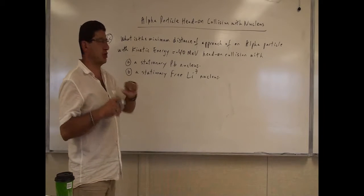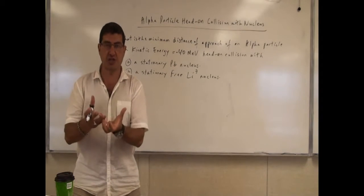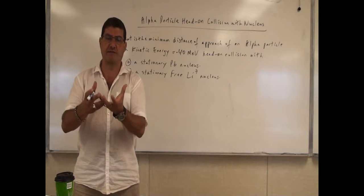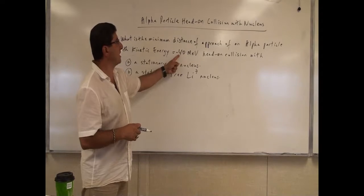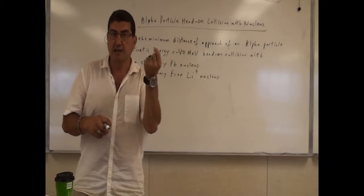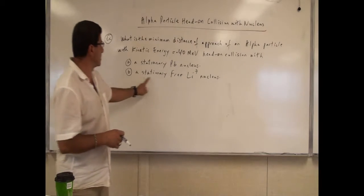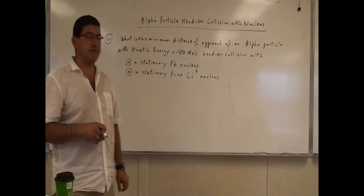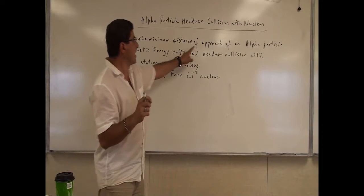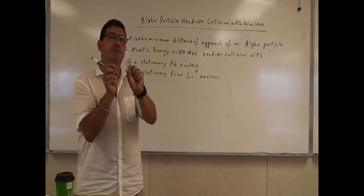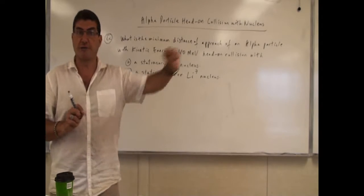In the first case we have a stationary lead nucleus — it is stationary and it will stay stationary, kind of confined to the atom. So when the nucleus gets bumped by the alpha particle, the nucleus will still stay pretty much standing. Whereas in the second case we have a free lithium-7 nucleus not bound to the atom, so after the alpha particle comes it's going to give a bump to the lithium-7 nucleus and the lithium-7 nucleus will also project forward.